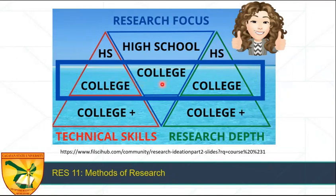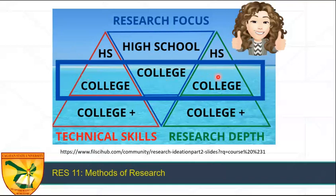On the other hand, the blue triangle here illustrates the research focus. At the high school level, your focus is general. For example, you are in STEM, so the focus is on all sciences. But now that you are in college, all allied health sciences, and have a major, specifically public health, your research focus becomes narrower. And finally, the third triangle is on research depth. The green triangle here, just like your red triangle, back in high school, the research is shallow. And now that you are in college, it is expected your research outputs are deeper. Hence, you can easily say if it is a high school research or a college research by looking at these parameters: the technical skills, the research focus, and the research depth.